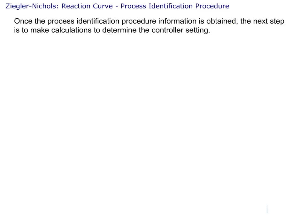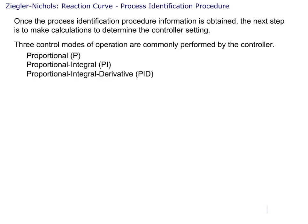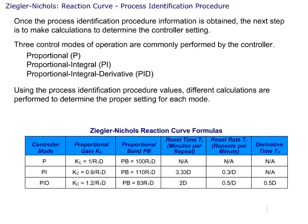Once the process identification procedure information is obtained, the next step is to make calculations to determine the controller's settings. Three control modes of operation are commonly performed by the controller. These include Proportional (P), Proportional Integral (PI), and Proportional Integral Derivative (PID). Using the process identification procedure values, different calculations are performed to determine the proper setting for each mode. This is the chart for the Ziegler-Nichols reaction curve formulas.